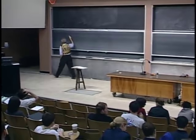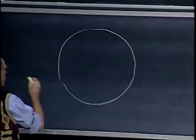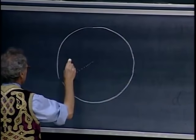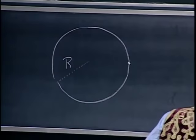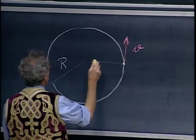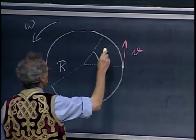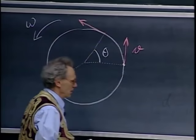Going back to rotating objects. I have an object here that has a certain velocity v, and it's going around with angular velocity omega. A little later the angle has increased by an amount theta, and then the velocity is here.